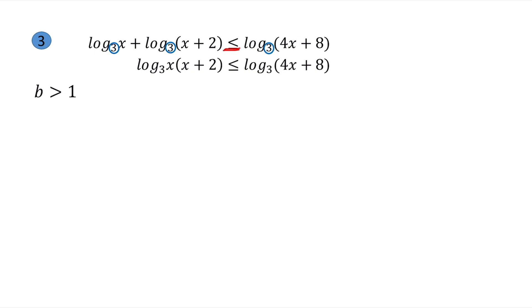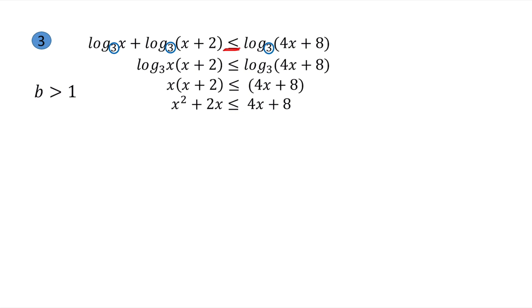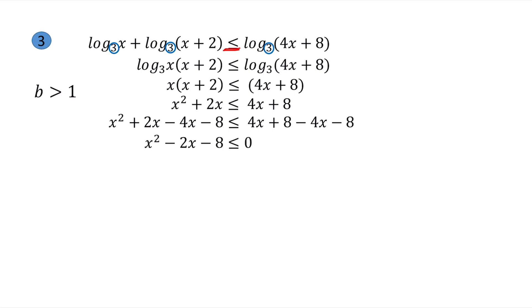Through the property of equality for logarithmic equations, we get x·(x+2) ≤ 4x+8. Simplify: x² + 2x ≤ 4x + 8. Apply APE — move all terms to the left: x² + 2x − 4x − 8 ≤ 0, which simplifies to x² − 2x − 8 ≤ 0.